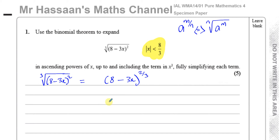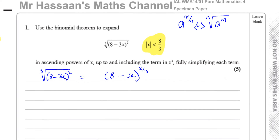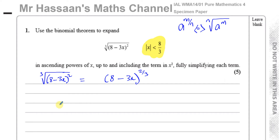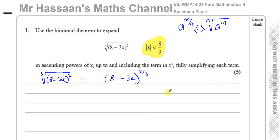In P2 we used the nCr button on a calculator to expand brackets, where you'd enter the power and the terms. But the nCr button only works for positive integer powers. If the power is a fraction or a negative number, nCr won't work. So we have to use what's called the binomial expansion.